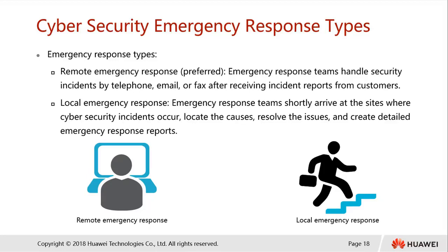The types of emergency response are classified into two categories: remote emergency response and local emergency response. Remote emergency response refers to the emergency response team handling security incidents by phone, email, or fax after receiving reports from victim customers. Local emergency response involves the emergency response team arriving on site where the incident occurred, locating and identifying the issue, solving it, and creating a report in accordance with the incident.